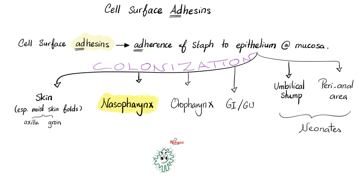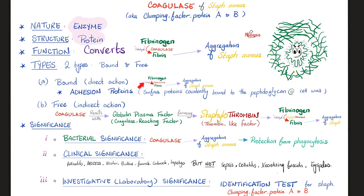Remember the story of the chef who caused food poisoning at the restaurant because he was picking his nose with his finger? He was transferring staph aureus from his nose onto your plate. You'll have all kinds of enterotoxin A in your body, but don't worry — it's mostly self-limiting. Coagulase helps the bacteria coagulate by reacting with globulin plasma factor, forming staphylothrombin — a thrombin-like factor — which converts fibrinogen to fibrin, helping staph aggregate and localize.